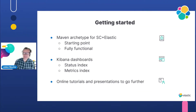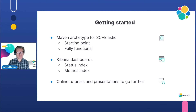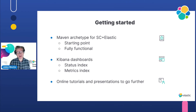How do you get started? It's pretty straightforward. There is a Maven archetype for Stormcrawler in Elastic, and that gives you a very good starting point to build a fully functional crawl topology with Stormcrawler that will index documents into Elastic. It will also give you the Kibana dashboards we've just seen, including one to view the status index. From there, you'll find online tutorials and presentations that will allow you to go further and refine the crawl to do exactly what you need.